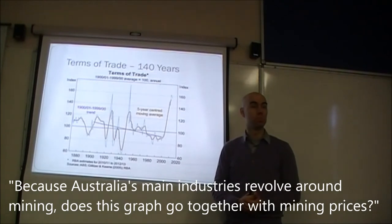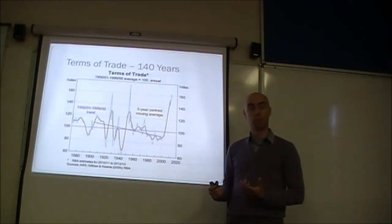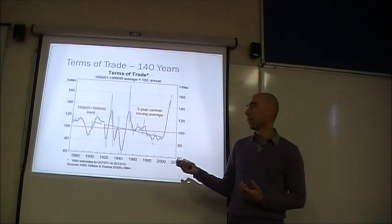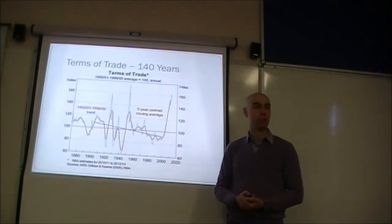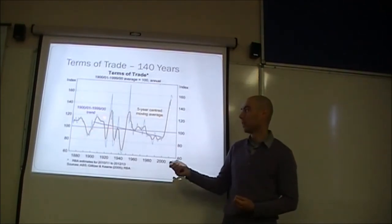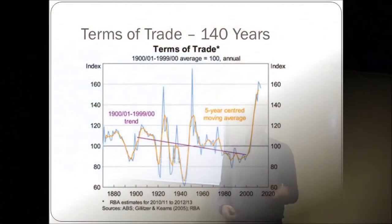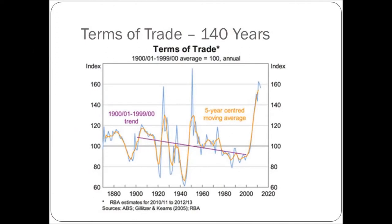Because Australia's main industries revolve around mining, does this graph correlate with commodity prices? It does today, but remember Australia's main production 100 years ago was agriculture — that was the main commodity Australia used to trade. Today it reflects mining prices more, but that's only on the export side. On the import side, it's traditionally always been manufacturing prices that have determined the import side of this formula.